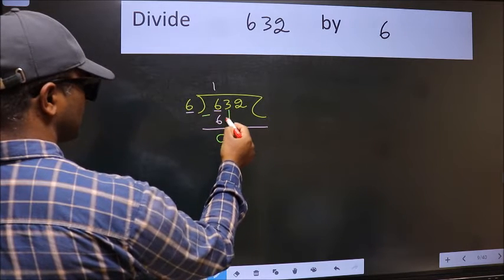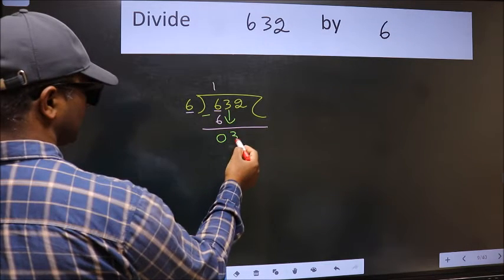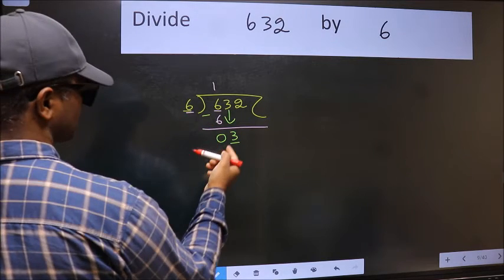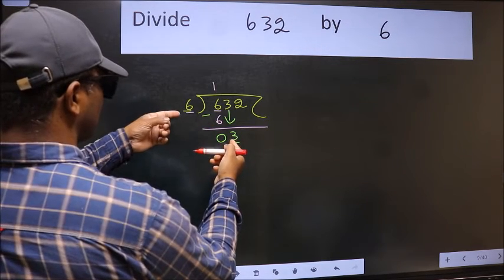After this bring down the beside number. So 3 down. Now here we have 3 and here 6. 3 is smaller than 6.